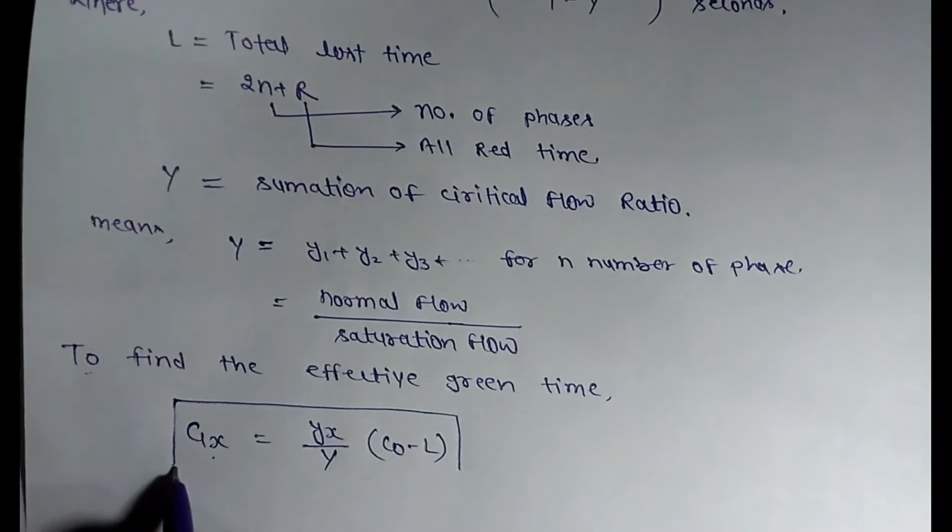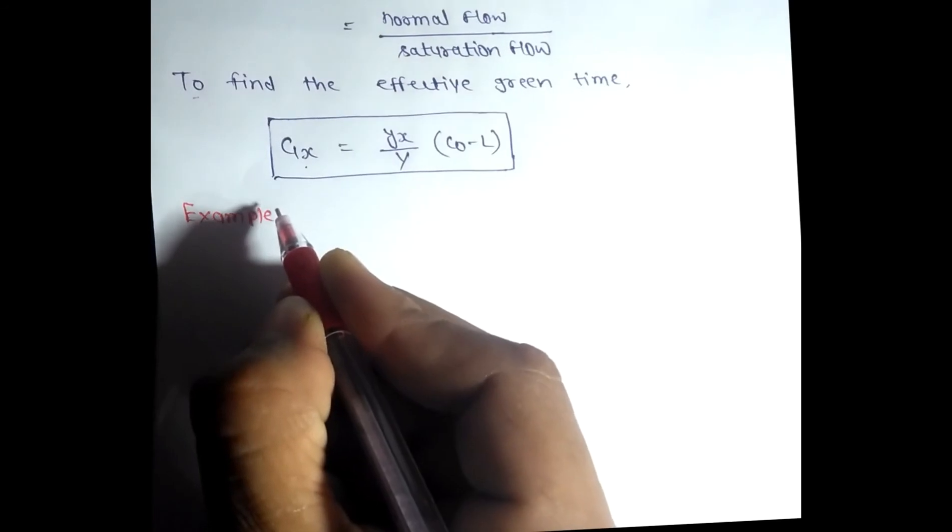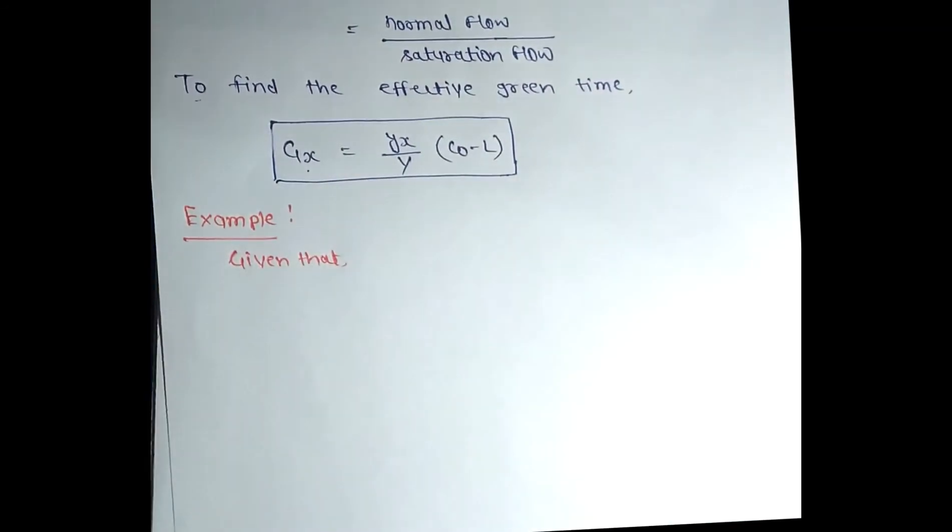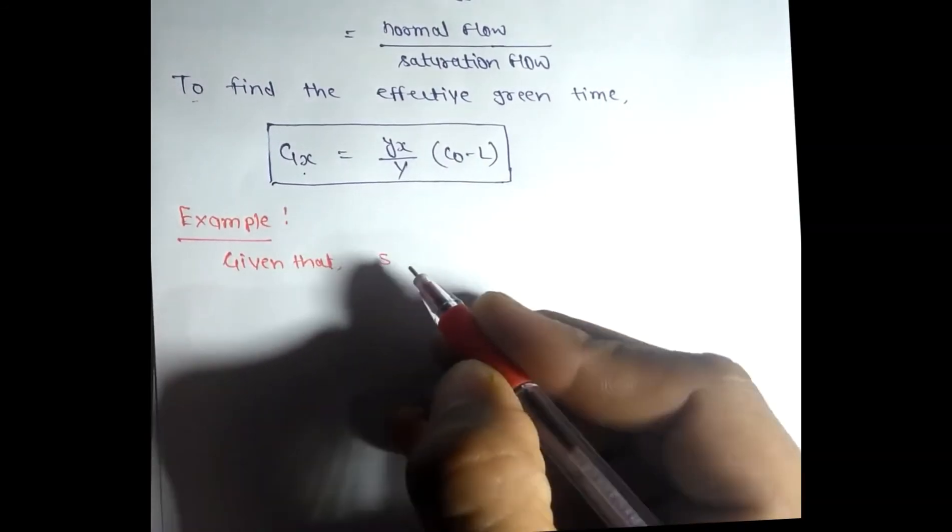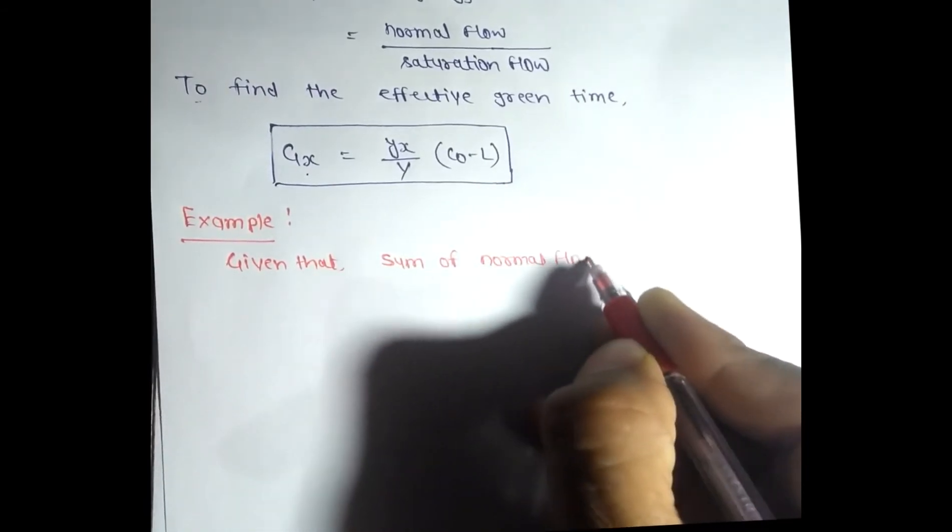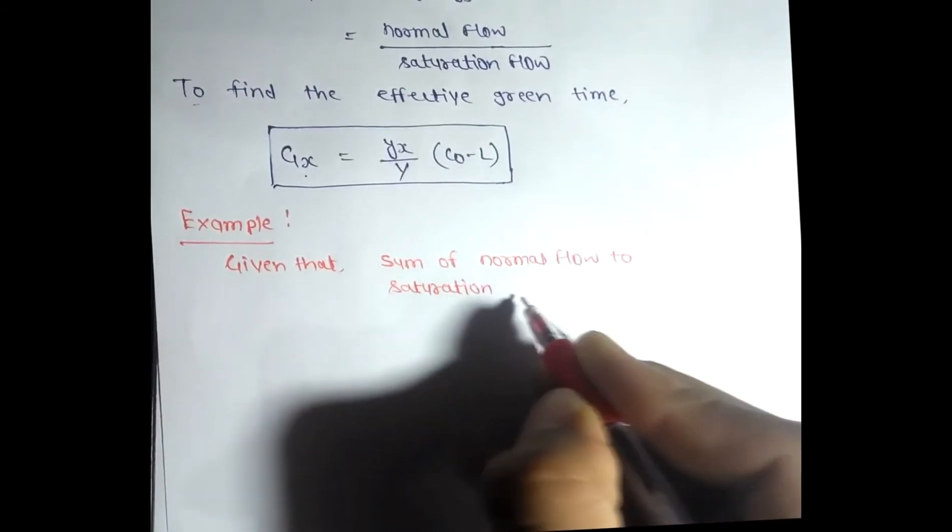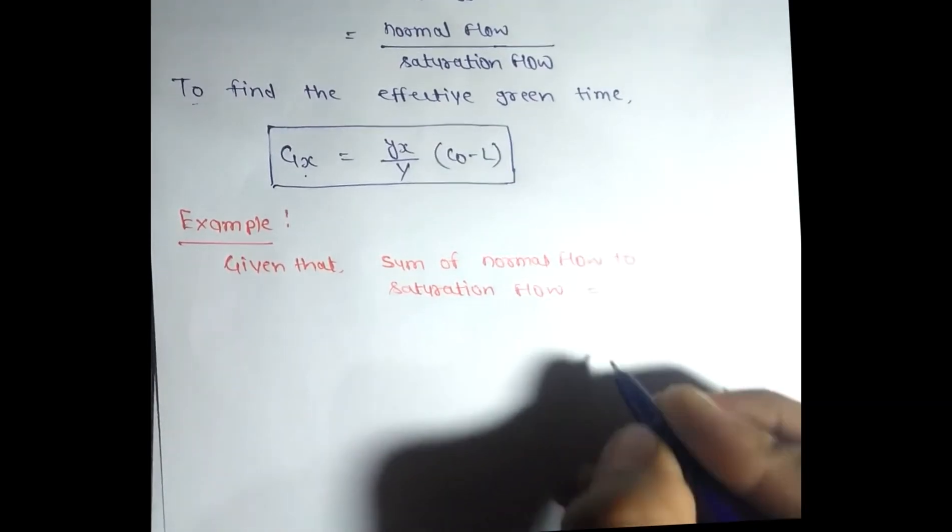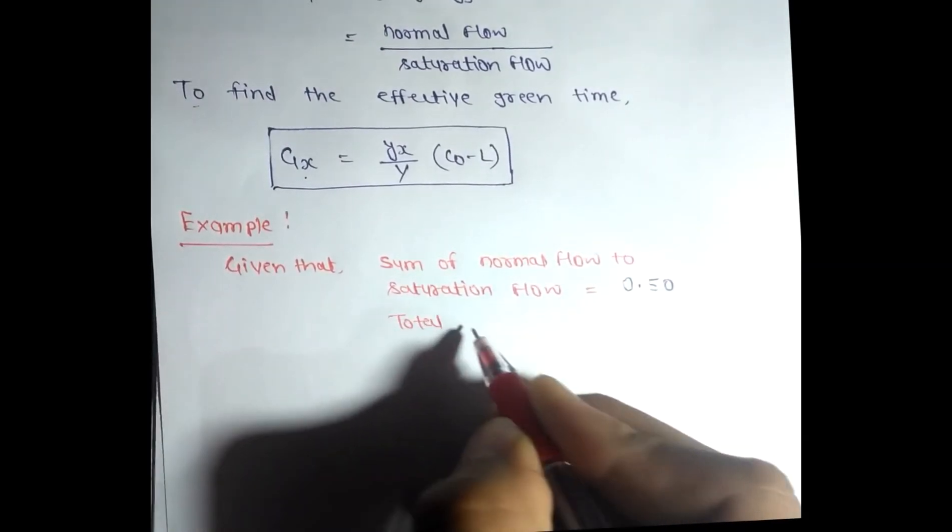Let's take an example. Given that the sum of normal flow to saturation flow equals 0.50, and the total loss time per cycle equals 10 seconds.